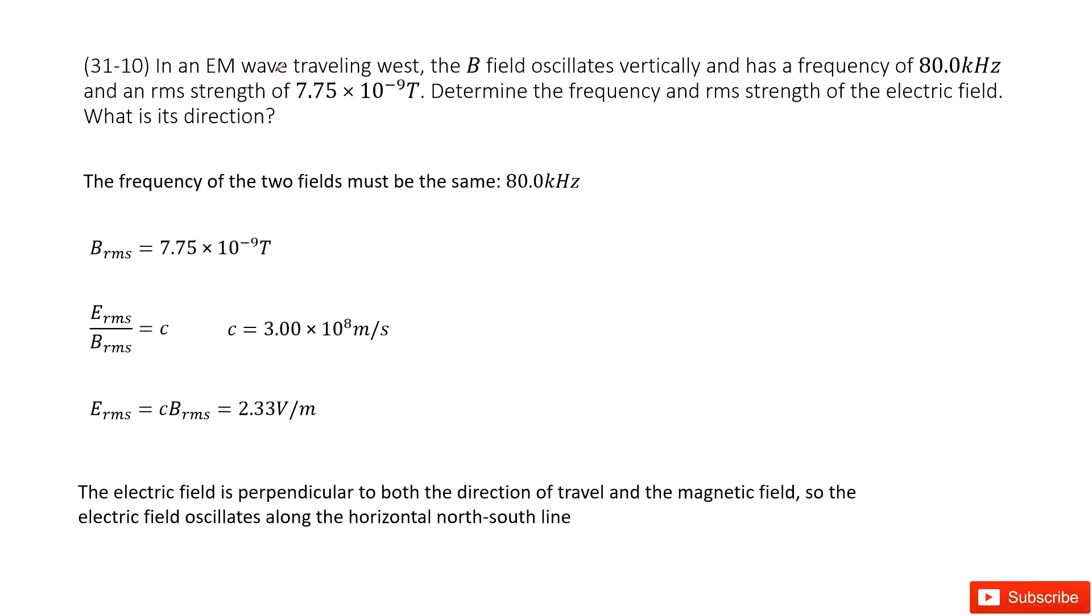The EM wave travels to the west, and we know the B field is vertical, frequency is given, and the root mean squared strength is given. Now determine the frequency of the electric field.